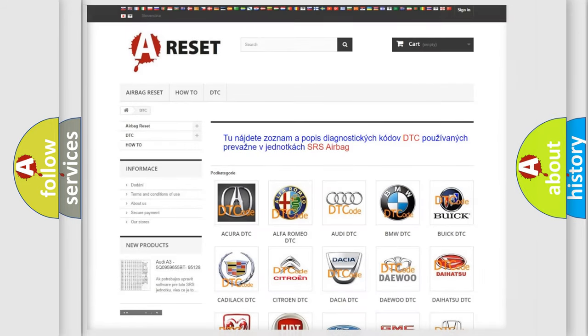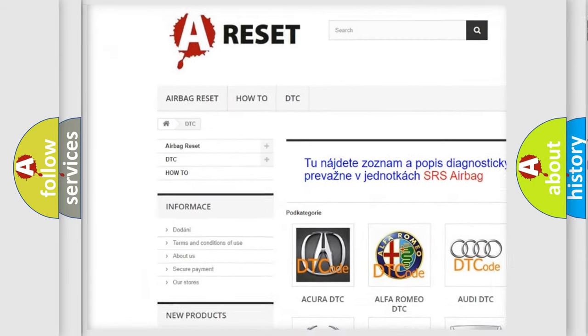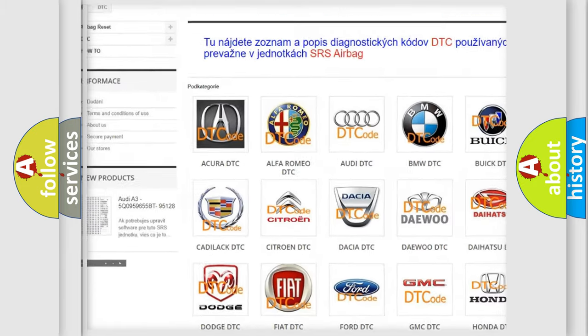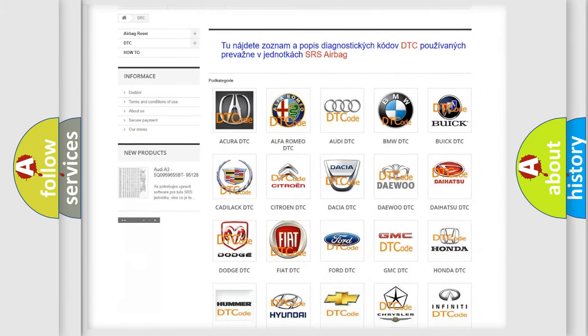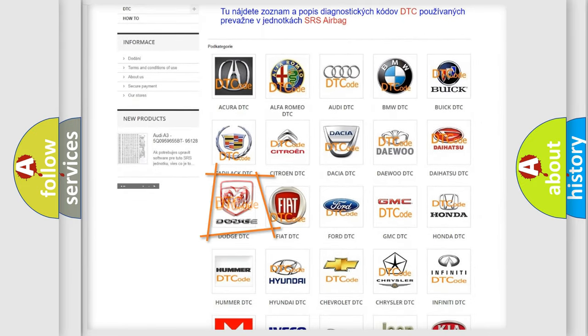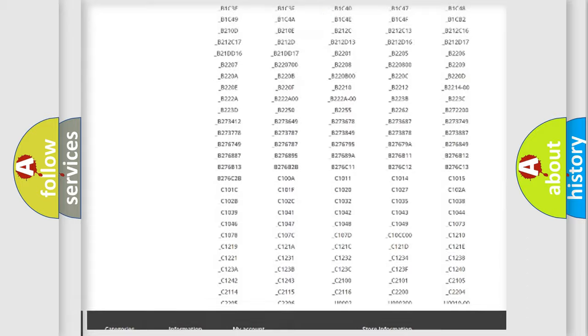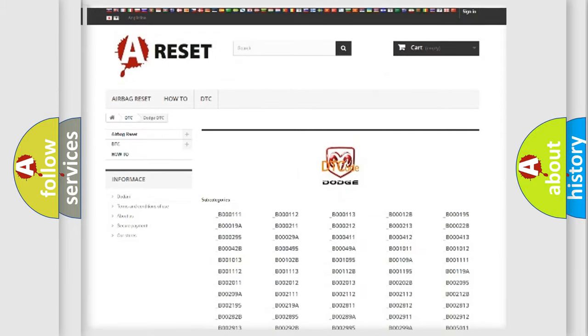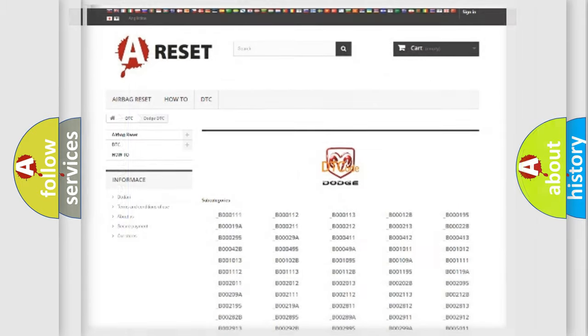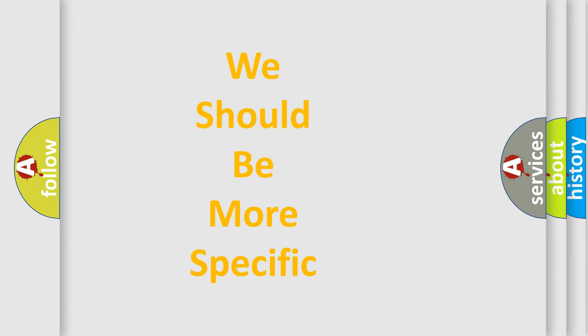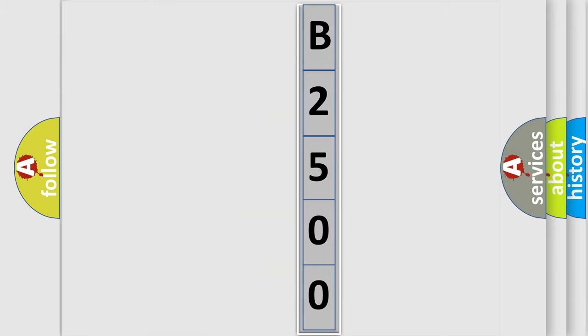Our website airbagreset.sk produces useful videos for you. You do not have to go through the OBD2 protocol anymore to know how to troubleshoot any car breakdown. You will find all the diagnostic codes that can be diagnosed in Dodge vehicles, also many other useful things. The following demonstration will help you look into the world of software for car control units.